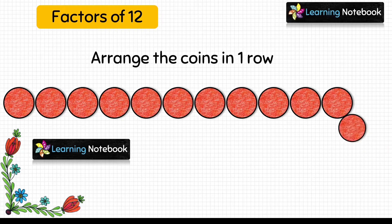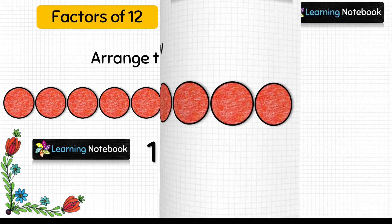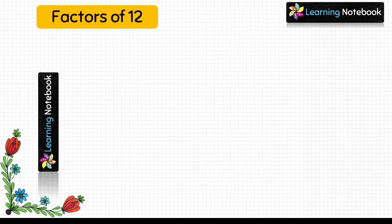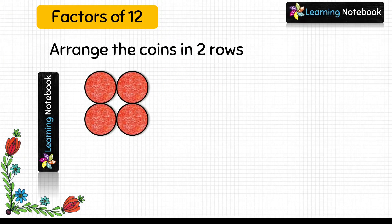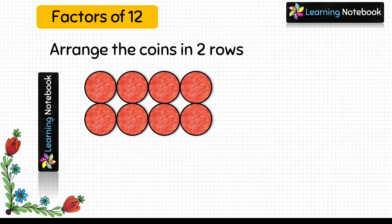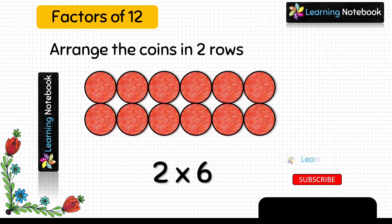So we are arranging all the 12 coins in one row. This arrangement of coins can be expressed as 1 into 12. Now let's arrange these coins in two rows — so here each row has 6 coins. This arrangement of coins can be expressed as 2 into 6.